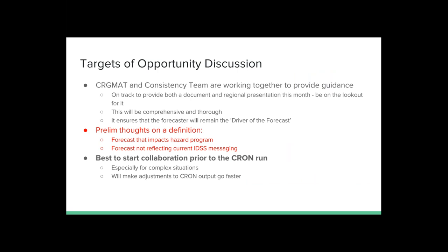Quickly on targets of opportunity: there's going to be a document and a regional presentation later this month. The consistency team has been working on it quite a bit — basically a comprehensive discussion on this topic. When you're going after the grid, you're looking for those that are going to change your message or maybe you have to do a hazard. Something that can help move you along quicker is just try and get that collaboration started before the cron runs — like if you see an ice storm coming up potentially towards the weekend, get that discussion rolling before the cron runs.